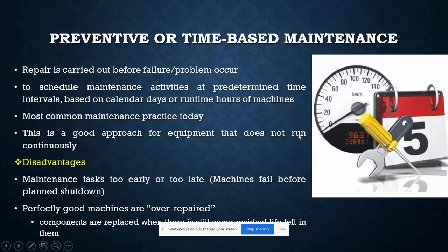The second type is preventive or time-based maintenance. Most people who own a bike or car follow a certain schedule — for example, taking the bike to the service station after every 2,000 kilometers regardless of whether a malfunction has occurred. Similarly, in industry, maintenance is performed once a month or once a year on a scheduled basis — repair work is carried out before any failure actually occurs.